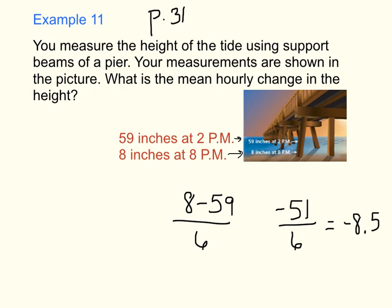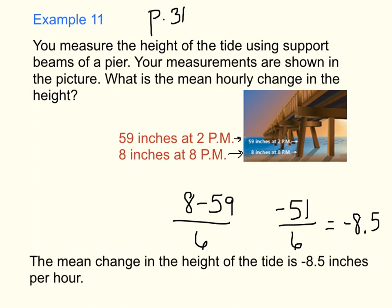We need to make sure we express this in a sentence: the mean change in the height of the tide is negative 8.5 inches per hour. And that would be our final answer.